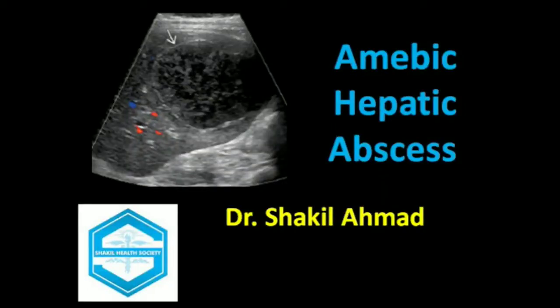This is a short presentation about amoebic hepatic abscess. The definition of amoebic hepatic abscess is a localized collection of pus in the liver due to Entamoeba histolytica, with destruction of the hepatic parenchyma and stroma.